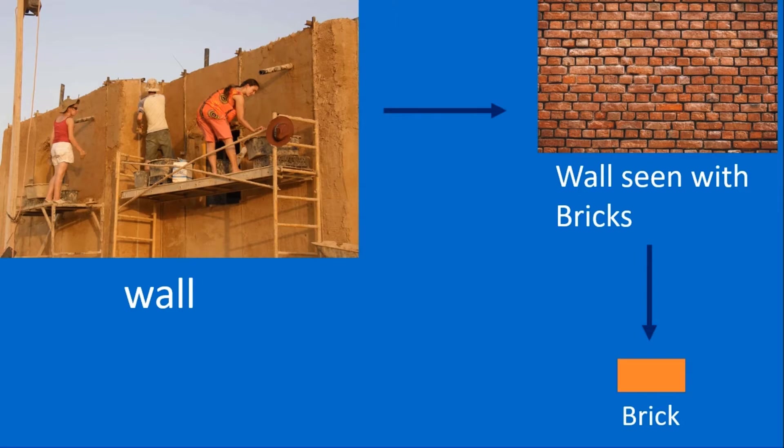When several bricks are assembled together, we get a wall. It means a brick is the smallest unit of a wall.